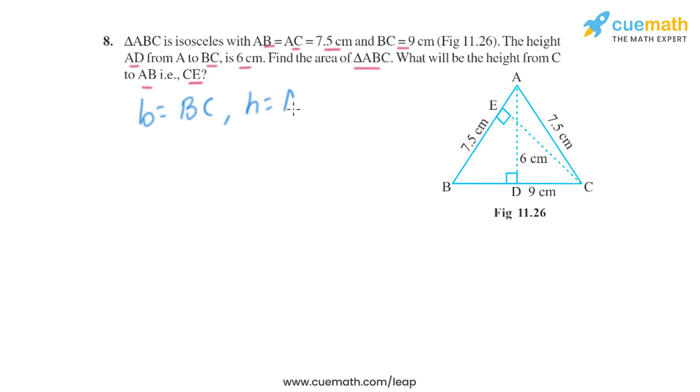Let's start this question. Let's take the base as BC and height as AD, so we can find the area of triangle from there. That is half into base into height, so it is half into 9 centimeters into 6 centimeters. So it will be basically 54 divided by 2, which is same as 27 square centimeters.